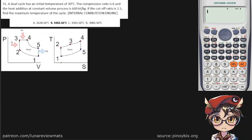A joule cycle has an initial temperature of 30 degrees Celsius, so we can assume that's our T1. That is equal to 303 Kelvin.